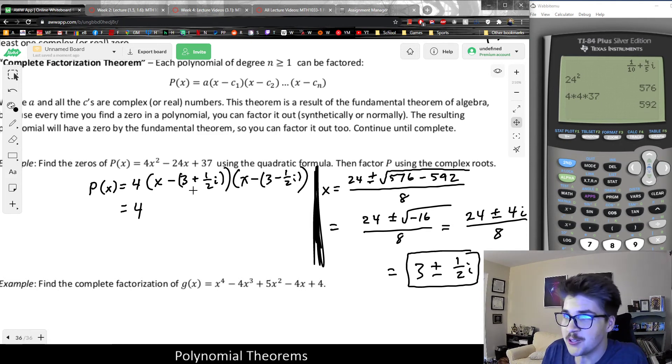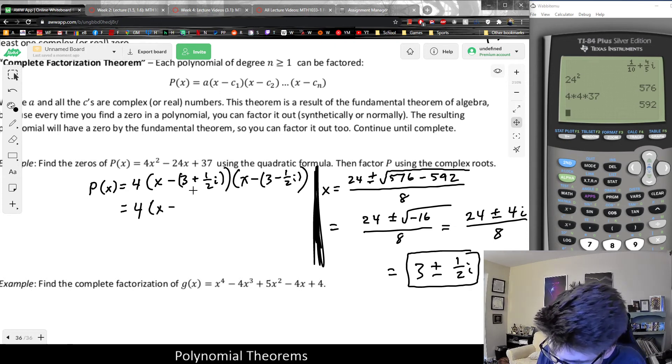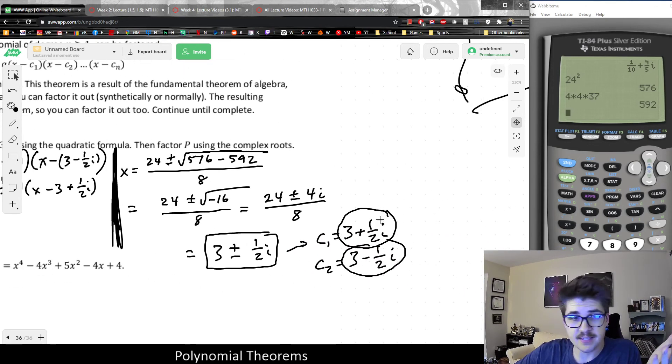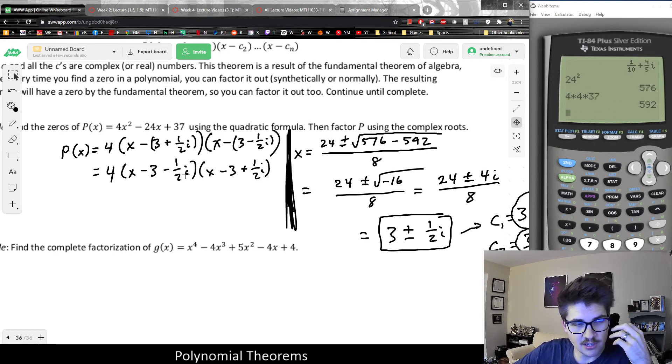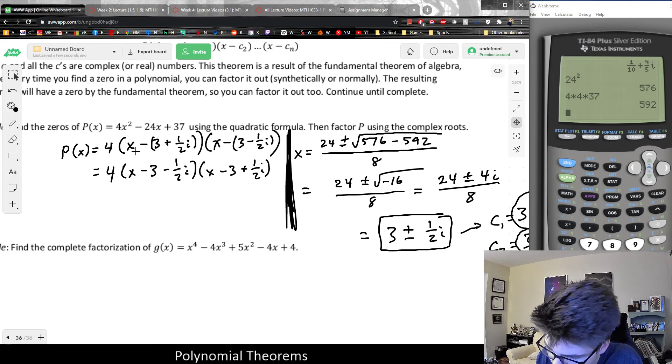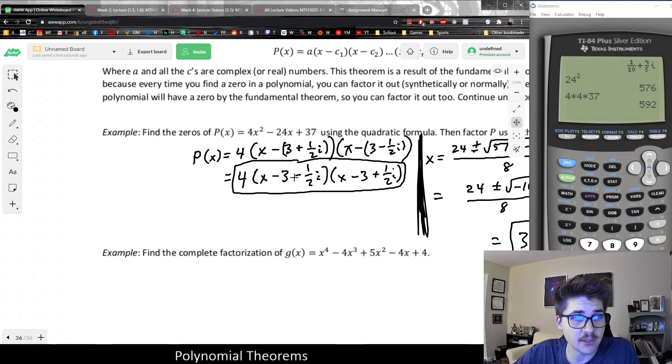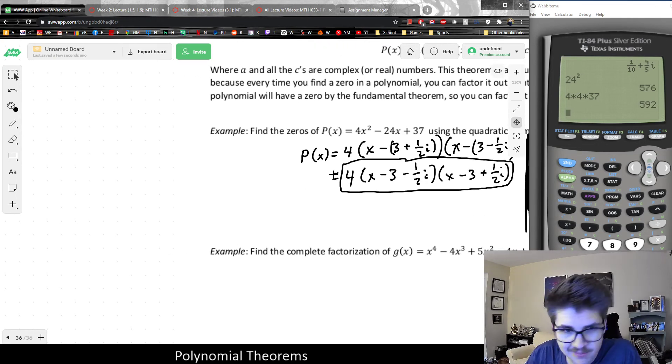So all that being said, what I could conclude is that p of x could be factored as a, which is 4, times (x minus c1). Well, c1 was 3 plus 1 half i. So basically, I would have (x minus 3 minus 1 half i). Let me go ahead and write this in parentheses, just for now. Usually, I would skip the parentheses. And then, times (x minus c2), which was 3 minus 1 half i. But basically, it's a way to factor the polynomial using complex number systems. Even though, usually, we'd say this is prime. What the complete factorization theorem implies is that there's no such thing. We can factor every single polynomial completely. It just takes weird numbers.